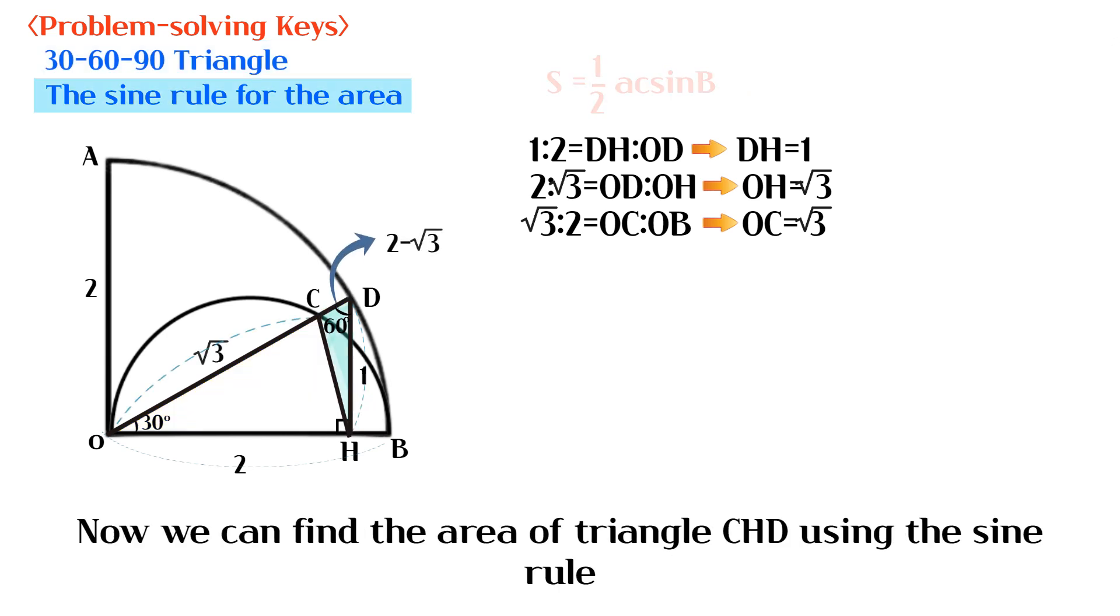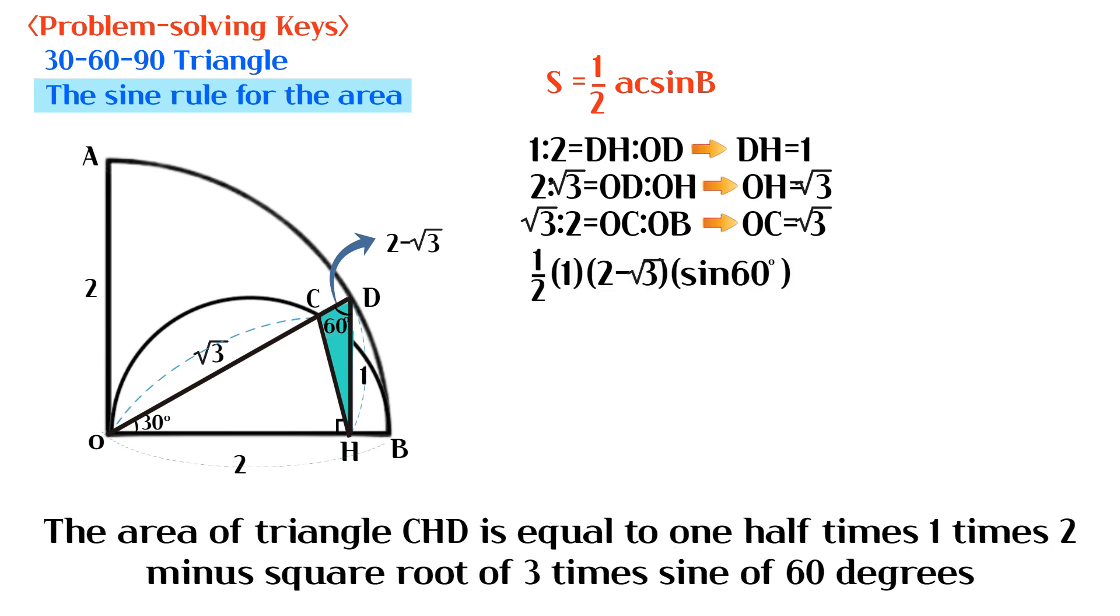Now we can find the area of triangle CHD using the sine rule. The area of triangle CHD is equal to 1 half times 1 times 2 minus square root of 3 times sine of 60 degrees.